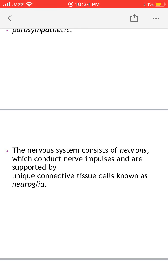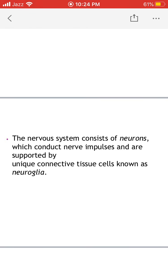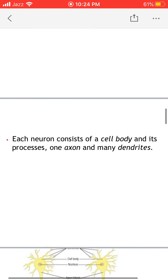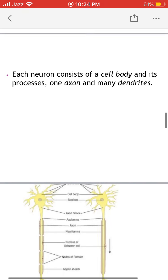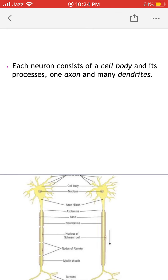The basic functional unit of the nervous system is called the neuron. Neurons conduct nerve impulses and are supported by a very unique connective tissue known as neuroglia. Each neuron consists of a cell body — you can see it labeled in the diagram — and its processes.